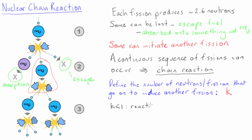If K is less than 1, then the fission reactions will eventually die out. If K is greater than 1, then there will be an exponential increase in the number of fissions that occur.